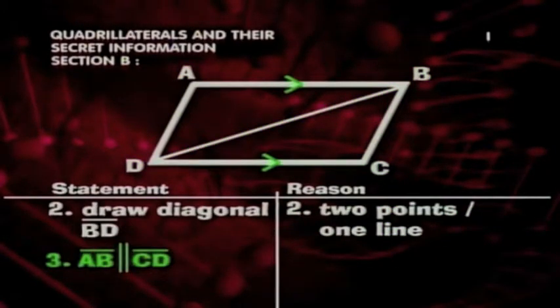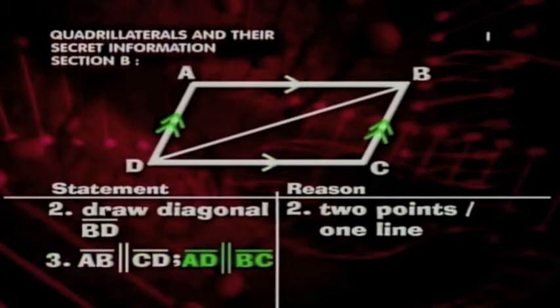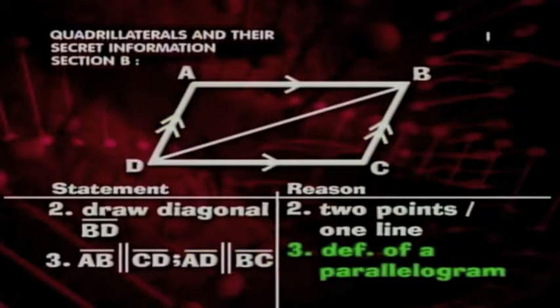Next, we'll say that AB is parallel to CD, and AD is parallel to BC. Why? Because this is the definition of a parallelogram.